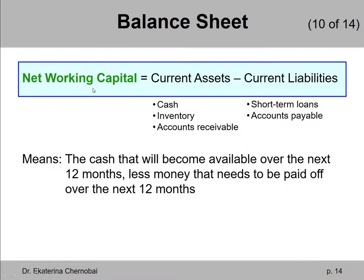What is net working capital? Net working capital is the difference between current assets — cash, inventory, and accounts receivable — and current liabilities, which include short-term loans and accounts payable.